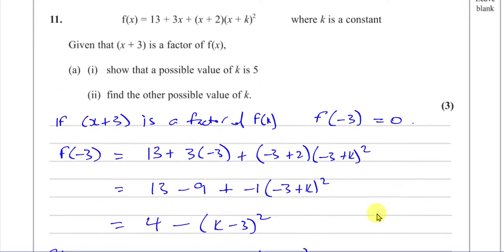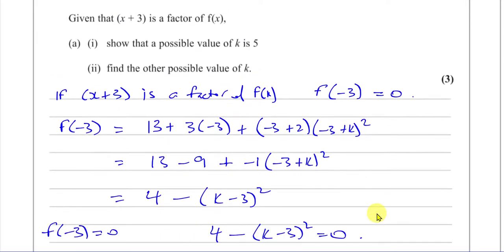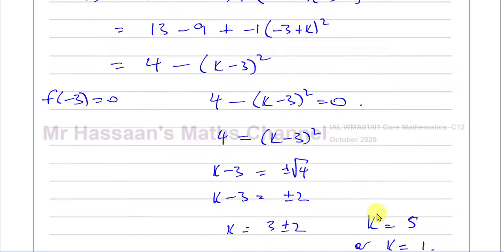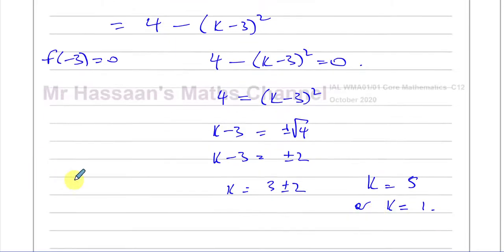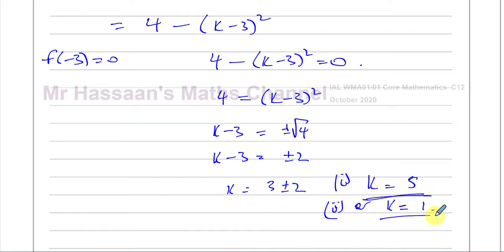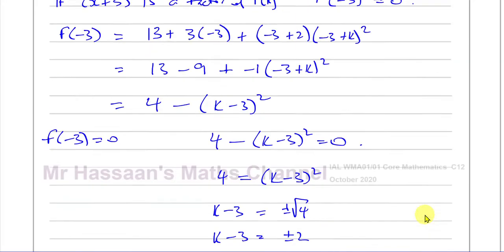Part 1 shows that a possible value of k is 5 — that's part 1 done. And k equals 1 is the other possible value of k, done in one step.